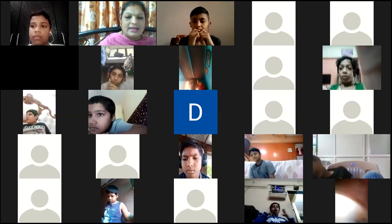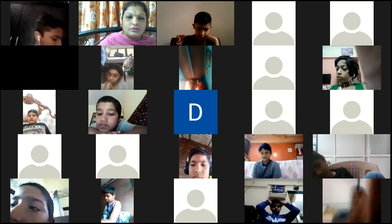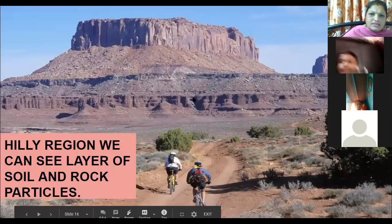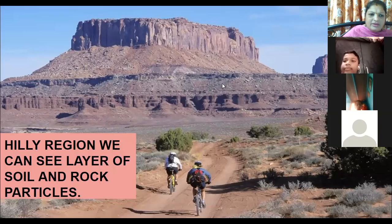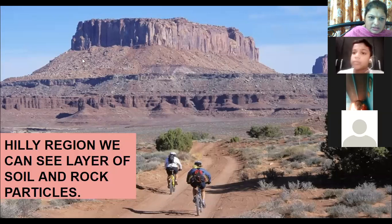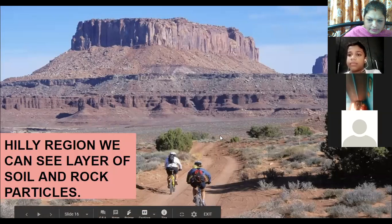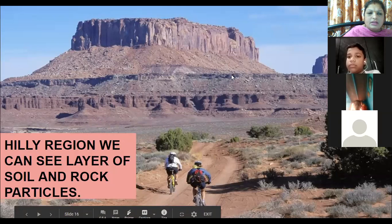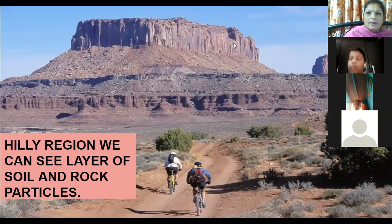Here you can see a hilly area. In this hilly region we can see a layer of soil and rocks — you can see the rocks, pebbles, and the layer of soil here. So in the hilly region we can see the layer of soil and rock particles.